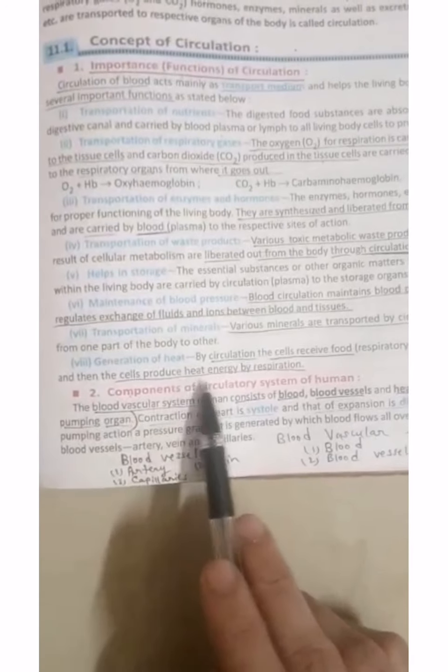Last one, generation of heat. How will heat be generated? By circulation. Cell receives food and oxygen, and then the cell produces heat energy.